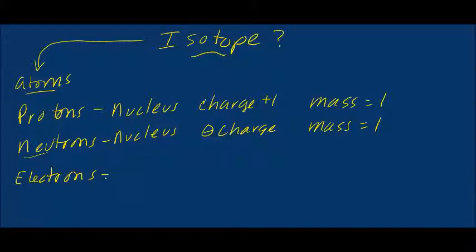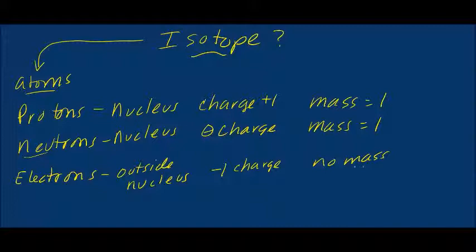Then there are electrons. Electrons are tiny and they're outside the nucleus. Electrons have a negative charge of one and they have almost no mass — actually about 1/1836th the mass of a proton or a neutron. When talking about the mass of an atom, the mass of the electrons is pretty insignificant. It's sort of like a flea sitting on the back of an elephant.